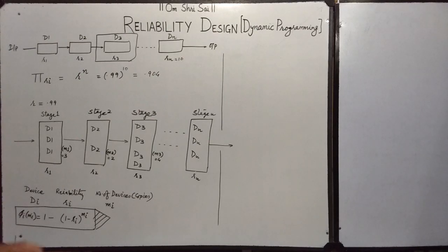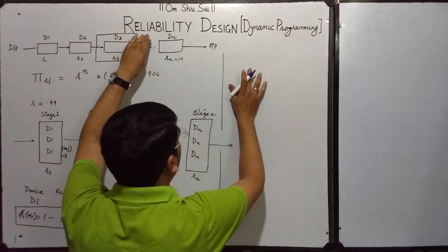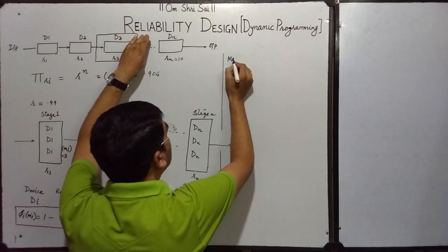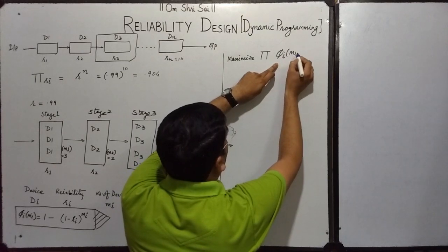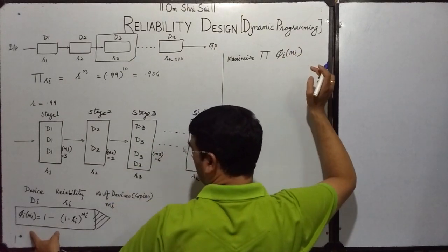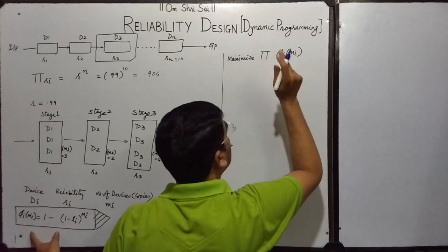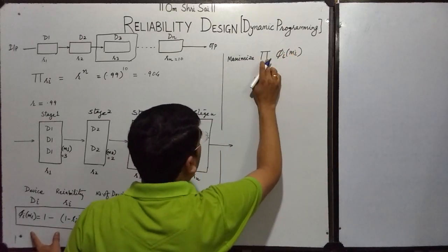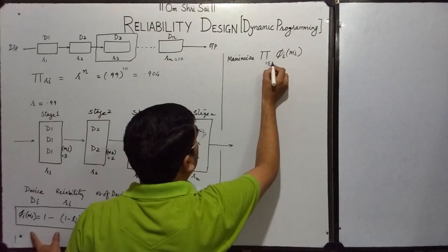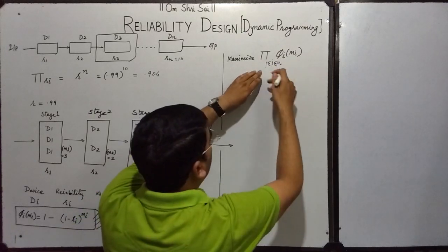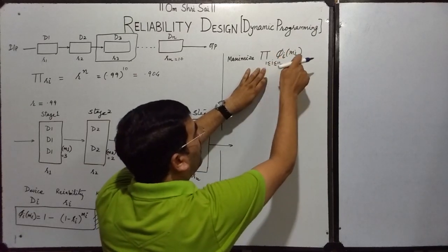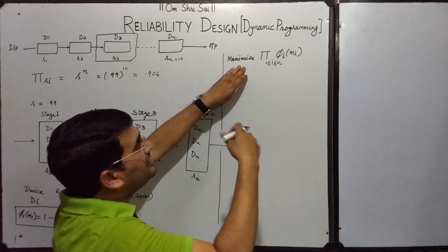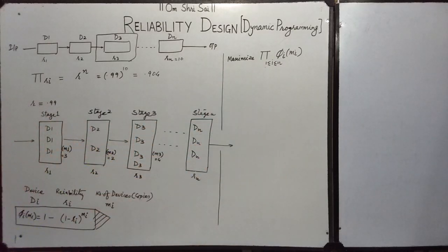Then, what is the reliability problem? We should define it mathematically. We have to maximize the reliability function — the product of phi(I, MI) for I ranging from 1 to N. If we combine the reliability of all stages, this gives the overall reliability, and we have to maximize it. This is our objective function, which is the multiplicative objective function.